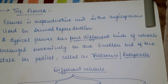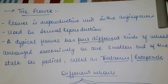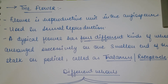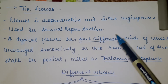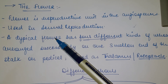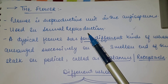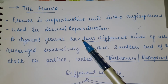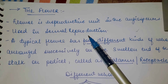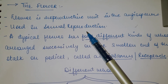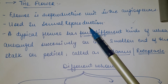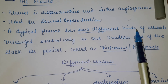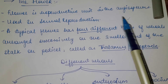Now let us talk about the flower. A flower is a reproductive unit of any angiosperm. It is used in sexual reproduction, and it contains different male and female reproductive parts that help carry out sexual reproduction. A typical flower has four different types of whorls.